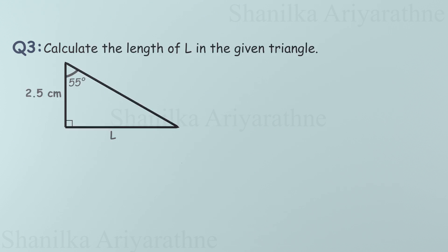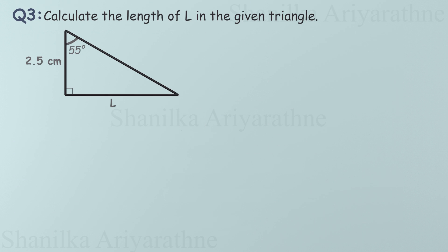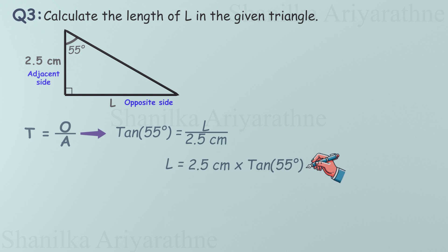Here is our next problem. This time we are given an angle and the length of the adjacent side to the angle. Our goal is to find the length of the opposite side. To do this, we can use the tangent ratio because it connects the opposite side to the adjacent side. Since tangent of 55 degrees is equal to the opposite side divided by the adjacent side, we set up the equation. To find L, we multiply. L is equal to 2.5 times tangent of 55.